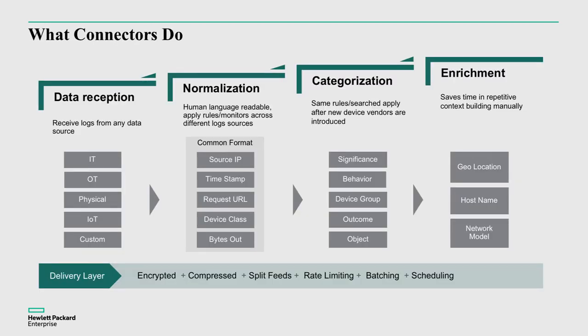Let's not forget what a smart connector does. A smart connector provides a number of stages: the ability to receive or collect data from specific applications, environments, or even data streams. It then performs normalization — turning that information into a common fixed format that's easy to understand and that we can apply logic and rules to process. It adds categorization — understanding the significance, the behavior, what type of device it came from, and the outcome — adding intelligence and context to the data. For example, a login failure on a Windows system is a different message to a login failure on a Linux system, but categorization gives us a common way to say 'login failure on any system.'